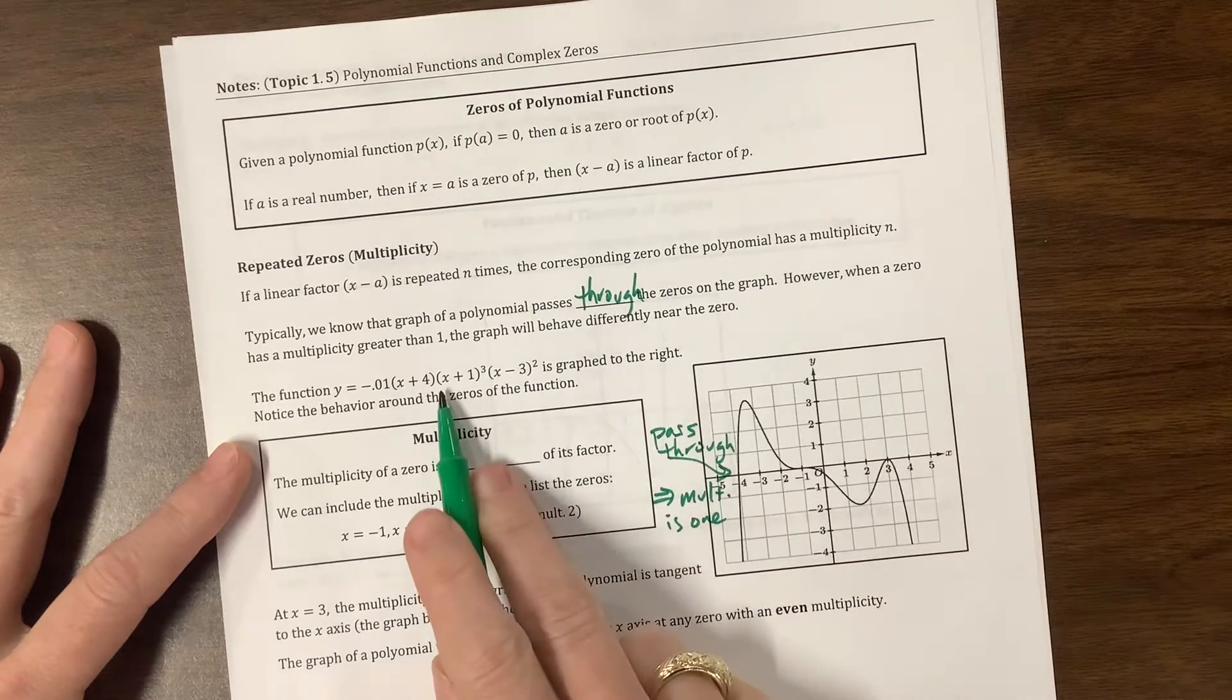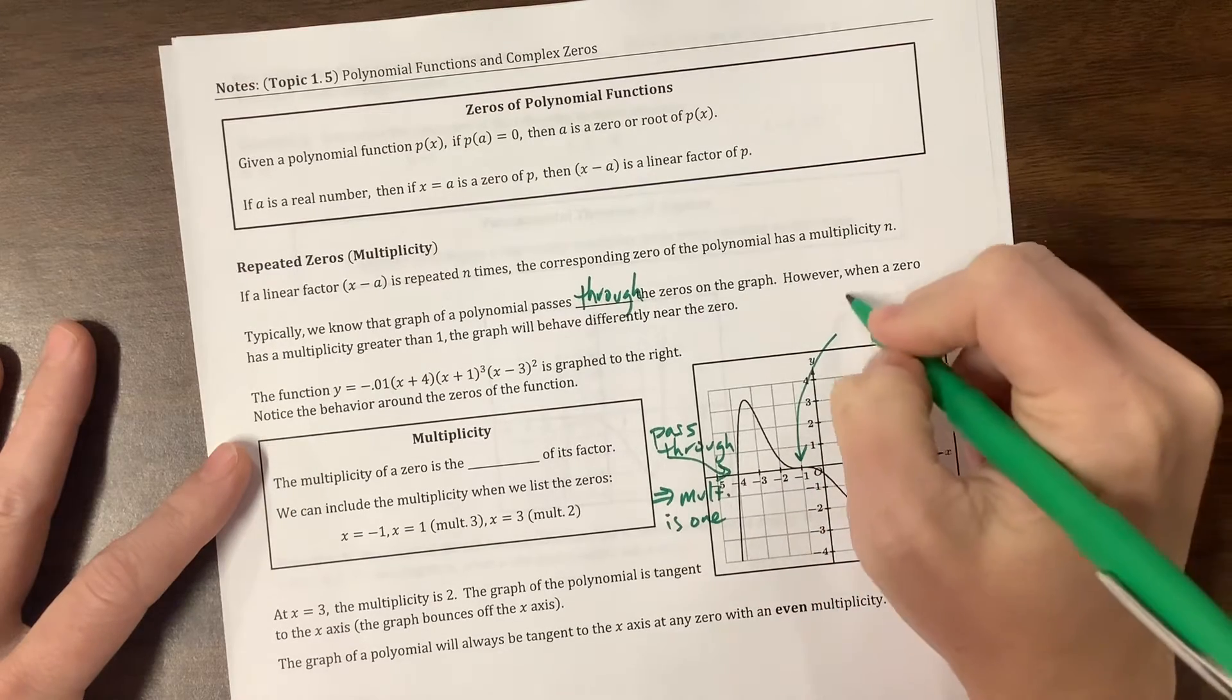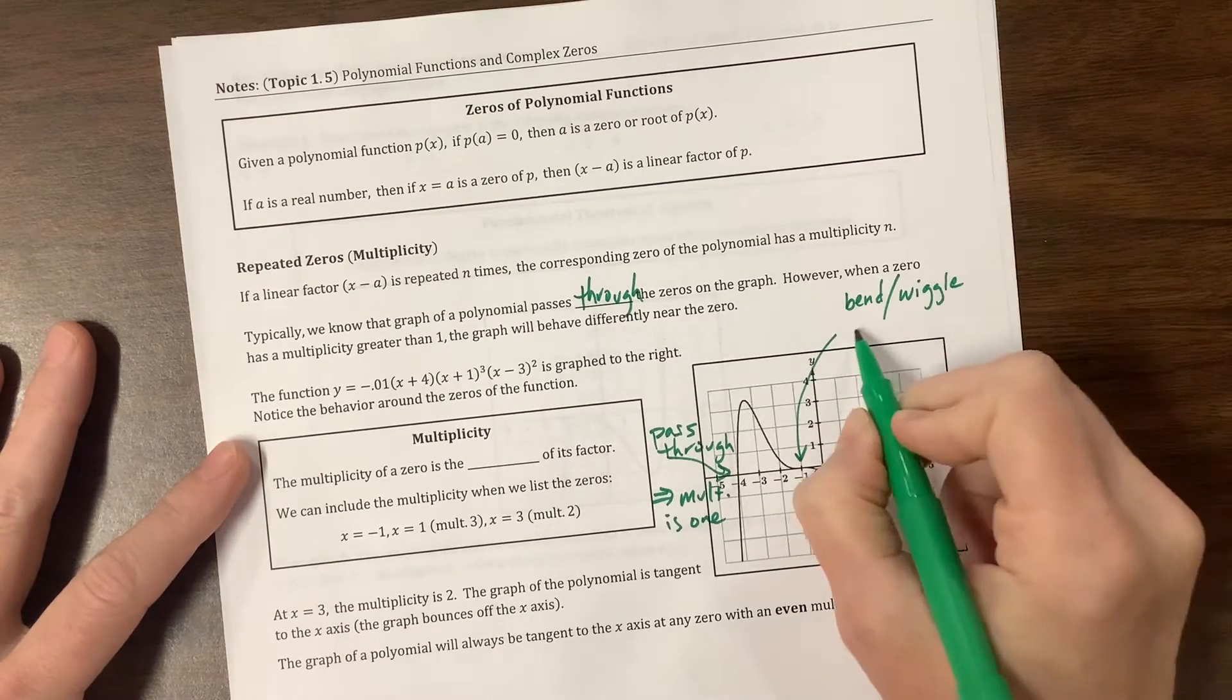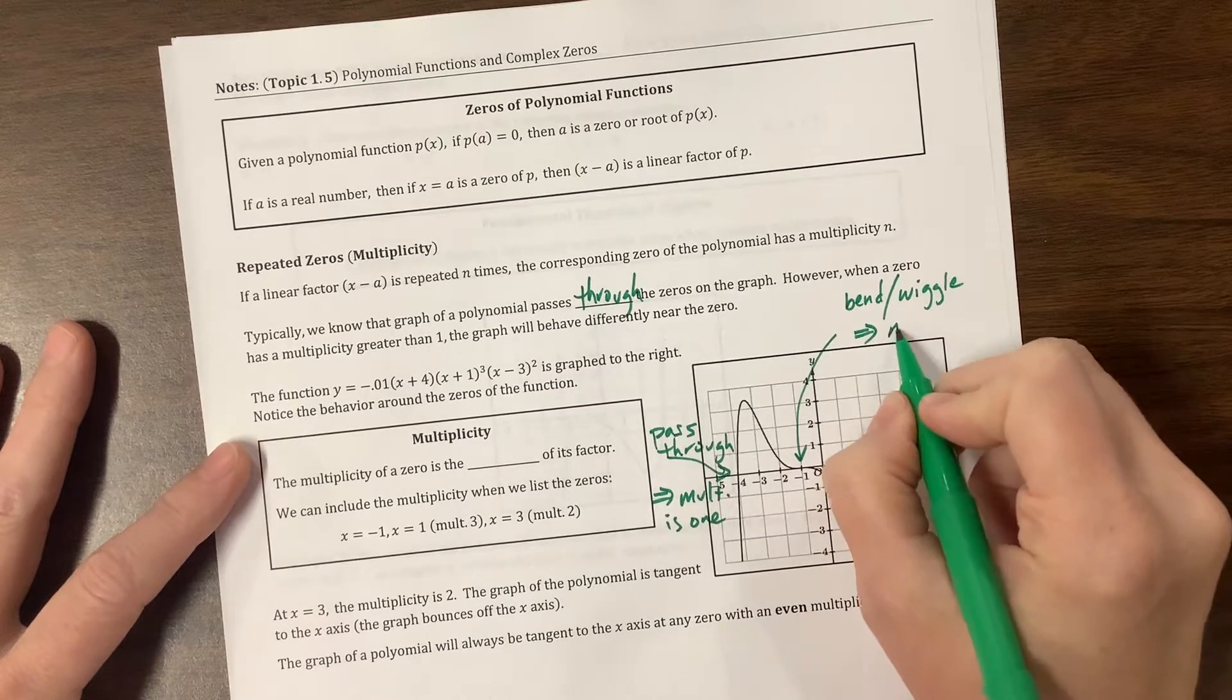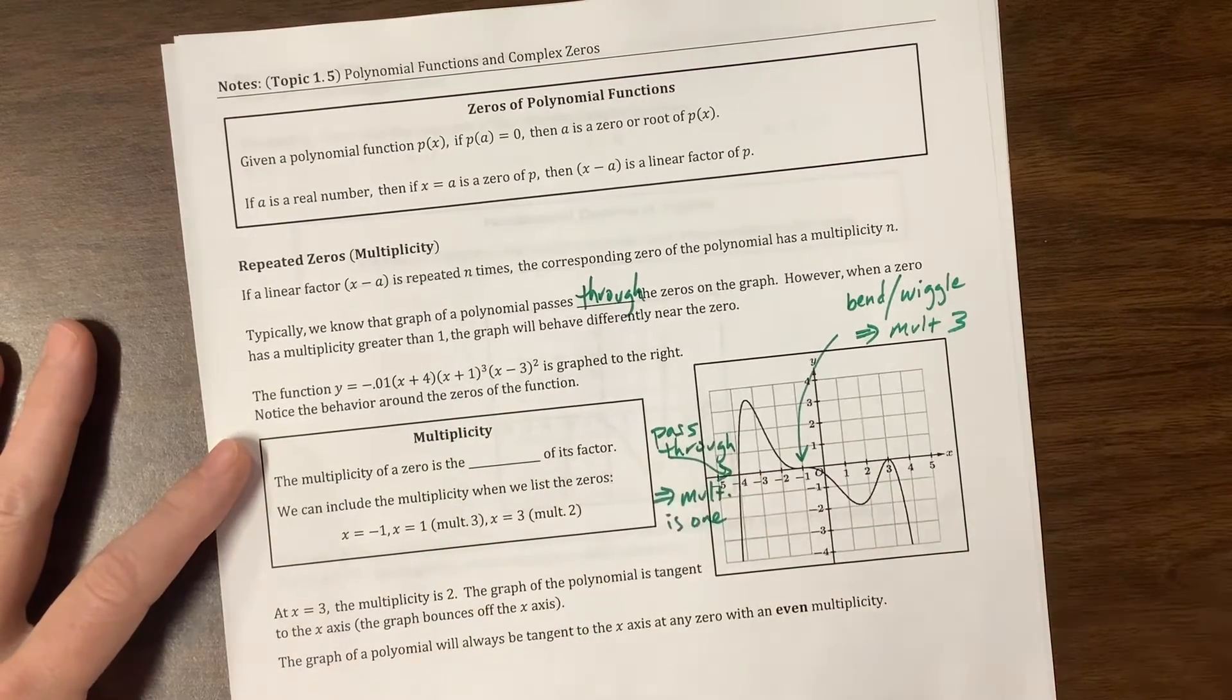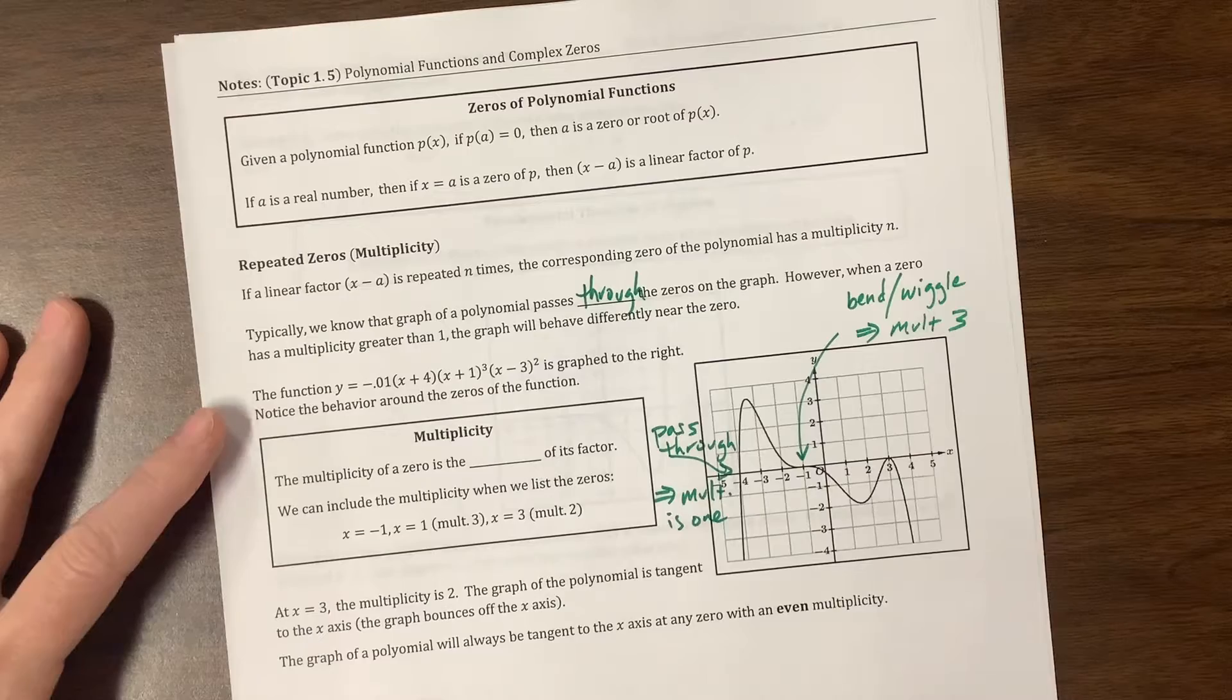The next one right here, I see an x plus 1 cubed, which tells us that at negative 1 right here, I refer to that as a bend, but I think I've heard kids call it a wiggle. That implies that it's an odd multiplicity bigger than 1. So multiplicity is going to be, in this case, 3, because that was 3 right here. It could have been 5, but it wasn't in the equation. In general, they tell us to do the most simple possible answer.